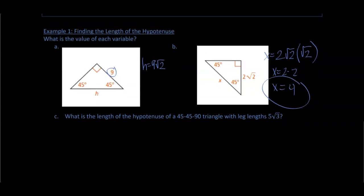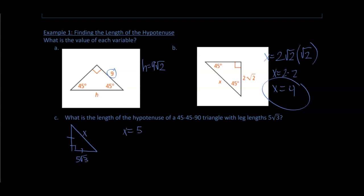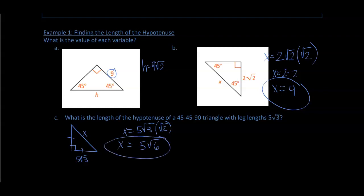What is the length of the hypotenuse of a 45-45-90 triangle with a leg length of five times the square root of three? We multiply five times the square root of three by the square root of two. The square root of three times the square root of two is the square root of six, and we still have that five out front, so x equals five times the square root of six.